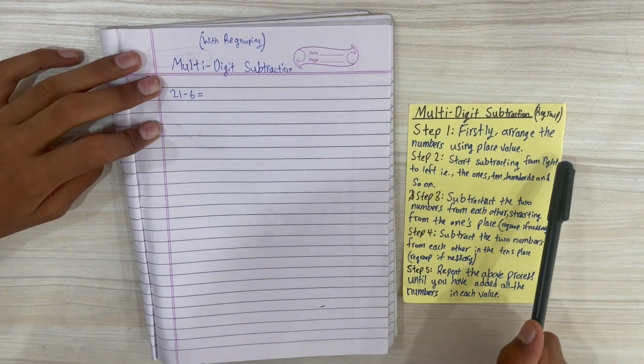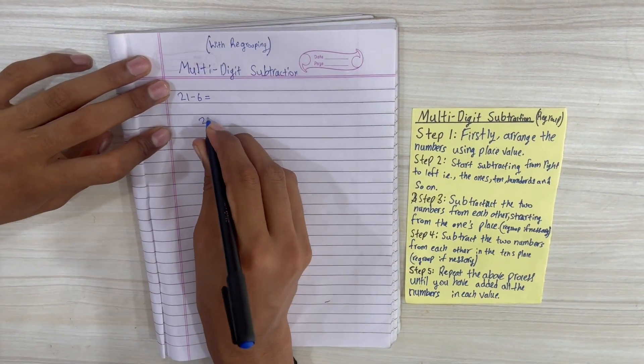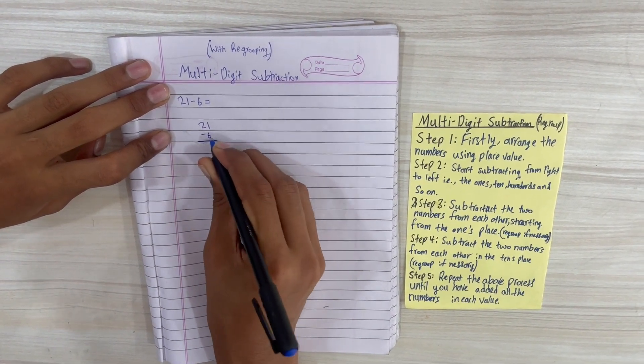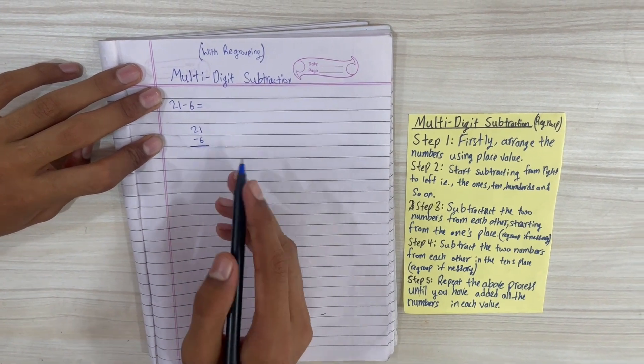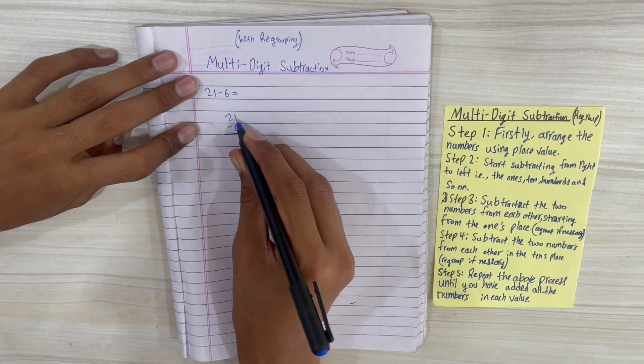First of all, step 1: arrange the numbers using place value. We'll take 21 minus 6. We're using this order because 6 and 1 are of the same place value—one's place and one's place. First of all, we won't be able to subtract 6 from 1. 1 minus 6 is not a rational number.